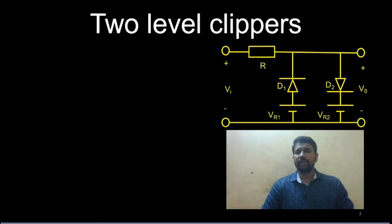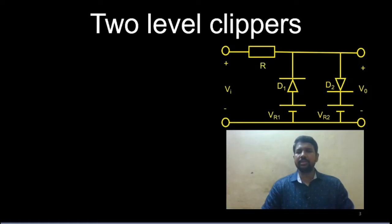Just like before, once we determine the states of the diodes it will be easy to find the output. With a single diode there are only two possible states — on or off. With two diodes there are four possible states (2² = 4). With three diodes there would be eight states. For n diodes, there are 2ⁿ possible states.